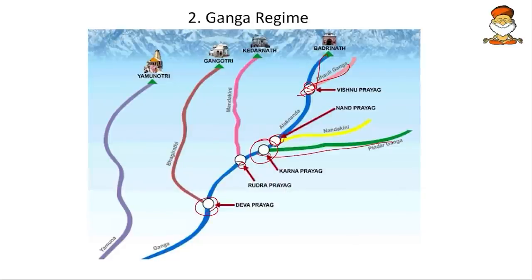We should also remember that most of the sacred places of Uttarakhand — Yamunotri, Gangotri, Kedarnath, and Badrinath — are birthplaces of various rivers. Yamunotri gives rise to Yamuna; Gangotri to Bhagirathi; Kedarnath to Mandakini; and Badrinath is the birthplace of the Alaknanda river.